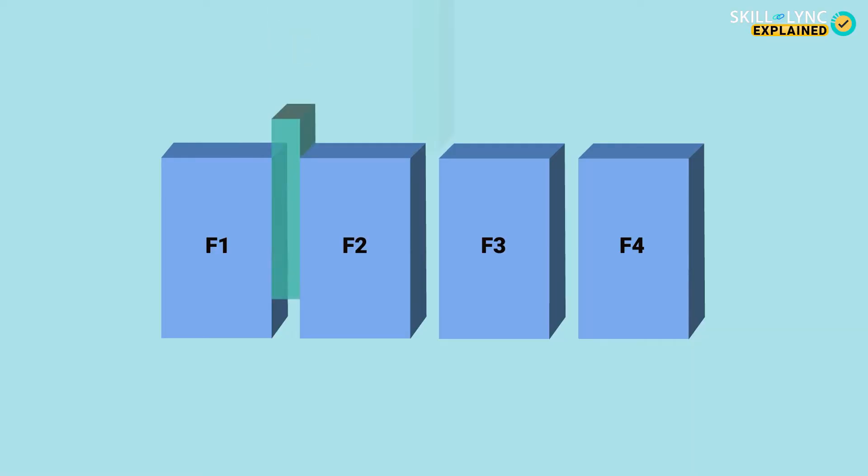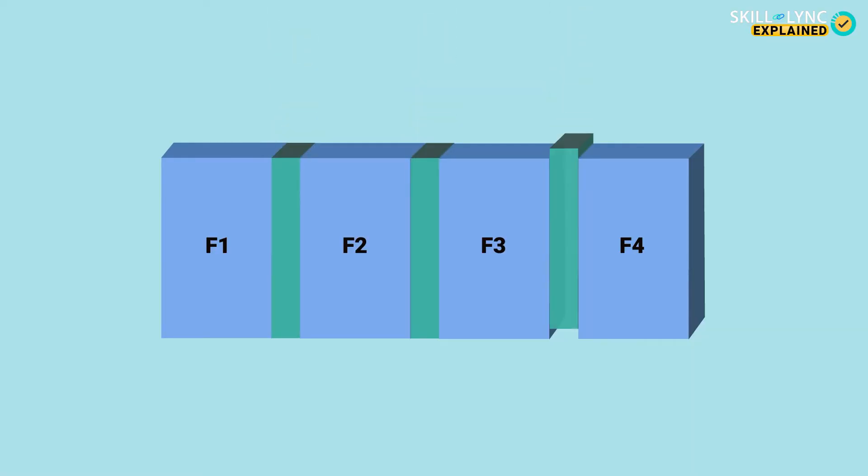One inherent problem with 1G technology was that, just like landlines, you would sometimes experience crosstalk, where you would end up in someone else's frequency band. This was prevented by introducing what were called Guard Bands — unused frequency placed between bands assigned to different users.